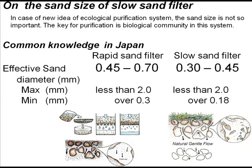On the sand size of slow sand filter, in the case of a new idea of ecological purification system, the sand size is not so important. The key for purification is the biological community in this system. Common knowledge in Japan: the effective size of sand diameter for rapid sand filter is 0.45 to 0.7 mm. However, the size for slow sand filter is almost half, at 0.3 to 0.45 mm.